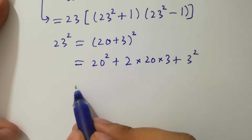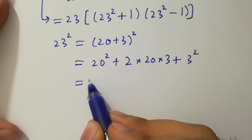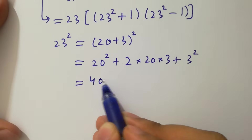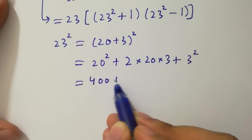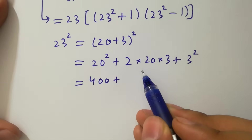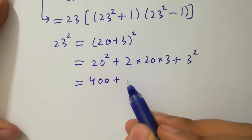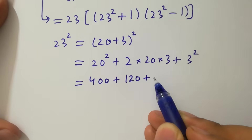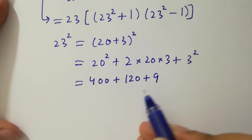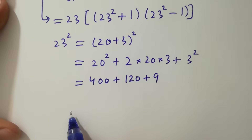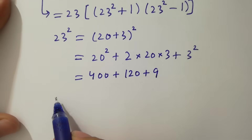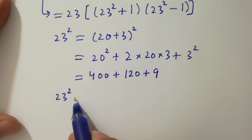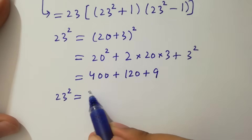20 squared is 400, 2 times 20 times 3 is 120, and 3 squared is 9. So 23 squared equals 400 plus 120 plus 9.